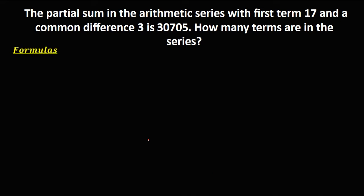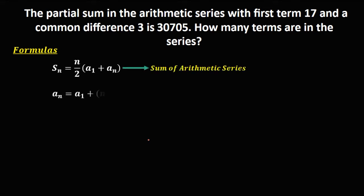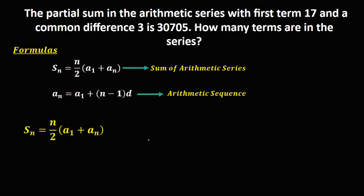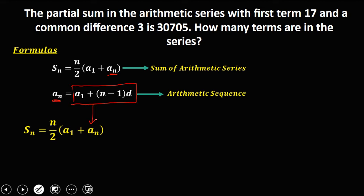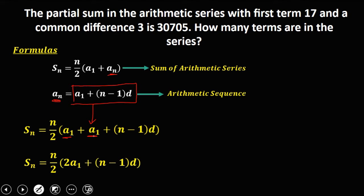To solve this problem we're going to use two formulas: the formula for the sum of an arithmetic series, and the formula for the nth term of an arithmetic sequence. We'll combine these two formulas. Substituting a sub n equals a sub 1 plus n minus 1 times d into the sum formula, then simplifying by combining the two a sub 1 terms, we get 2 a sub 1 plus n minus 1 times d.